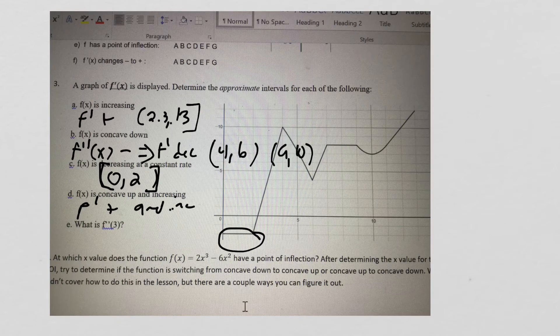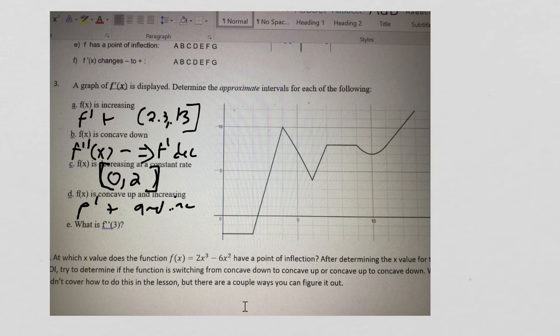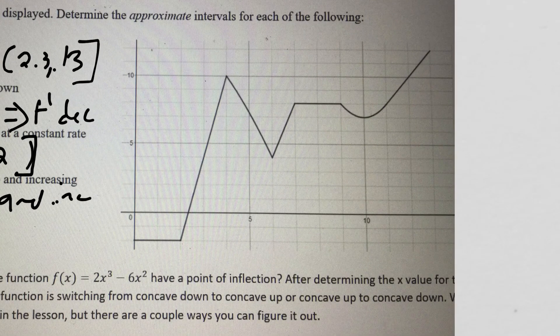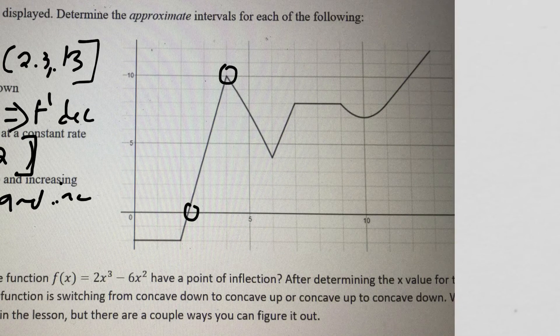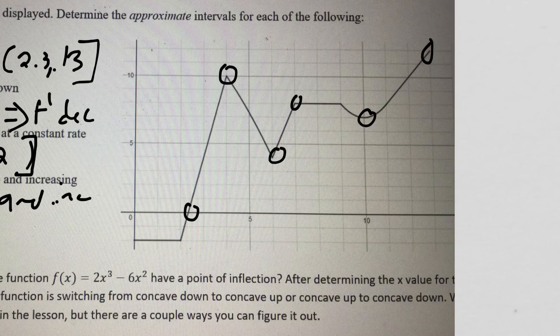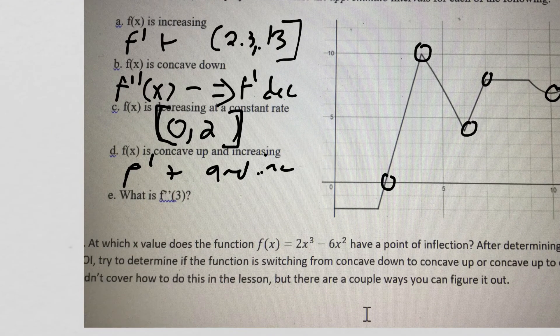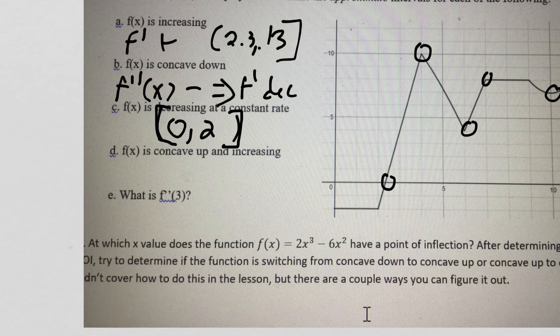So let's look at our graph. So f' is positive and increasing from, let's just circle, from here to here, from here to here, and from here to here. So that is from, I'm going to erase this so I have room to write my answer. That's from 2.3 until 4.